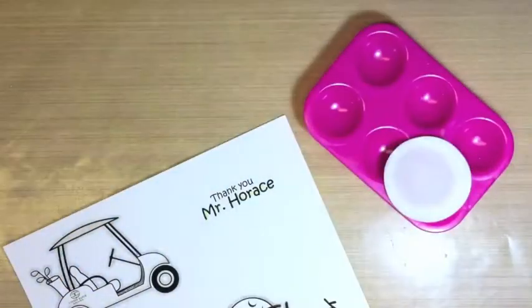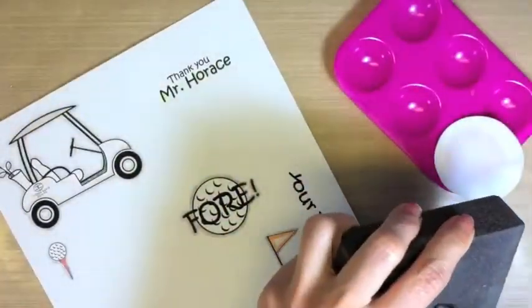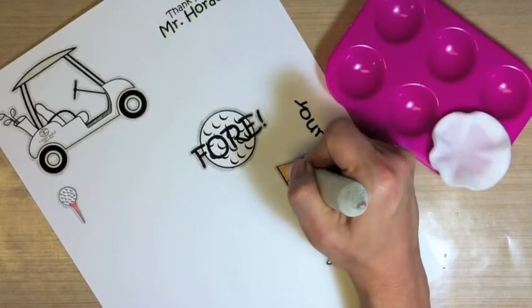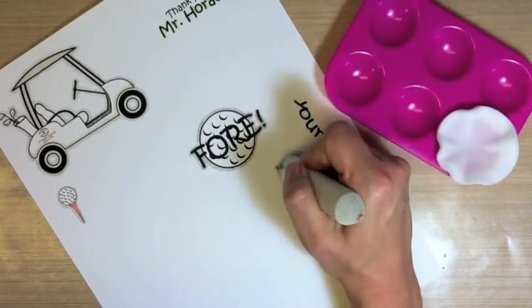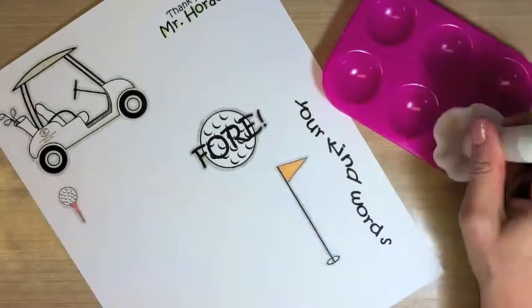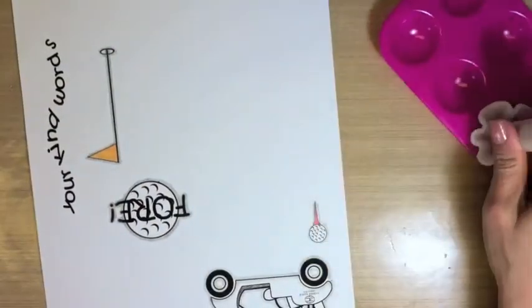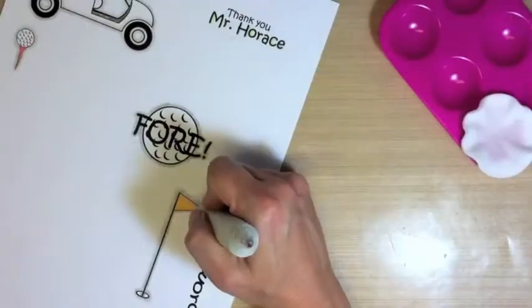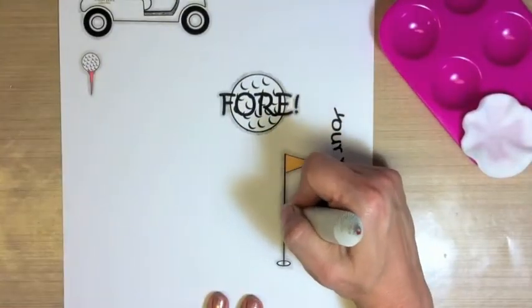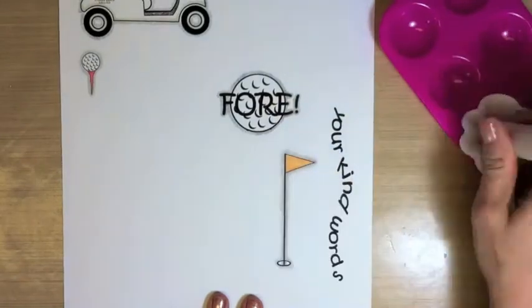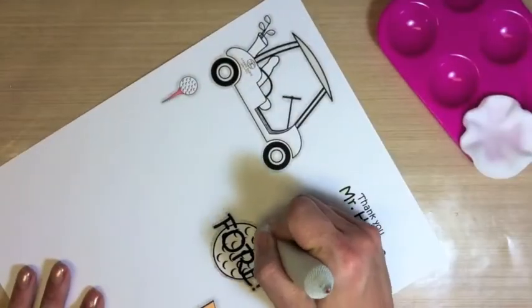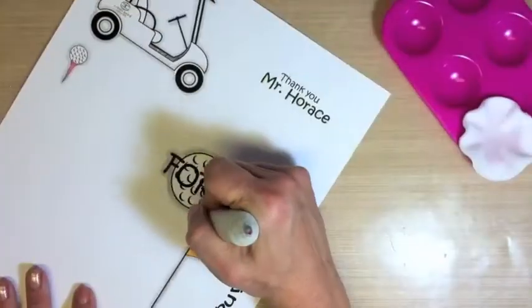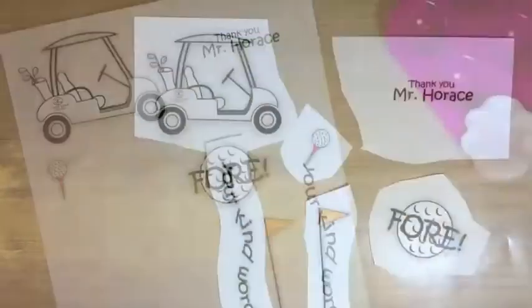Now we get to the fun part. We get to blend with our paper stump using the cotton pad to be our dispenser of our odorless mineral spirits. Using this technique with the cotton pad ensures that you will not get too much liquid on your paper stump. Be sure to sand your paper stump in between colors. I wonder who originally came up with this technique. It is so awesome and so forgiving.